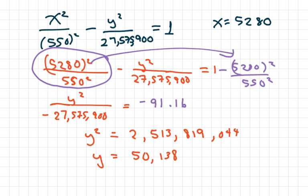Okay, so therefore, the fireworks display was 50,138 feet due north of person A. And if you want to convert, this is approximately 9.5 miles. So if you just want to divide this by 5280. And that's all.